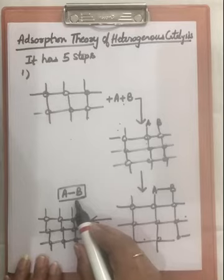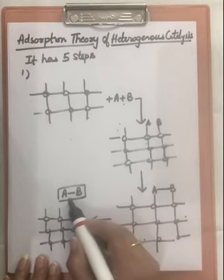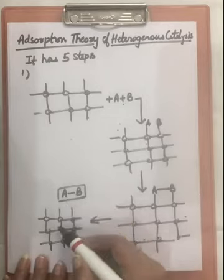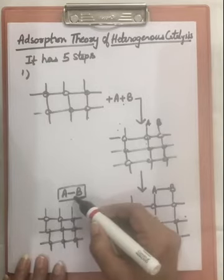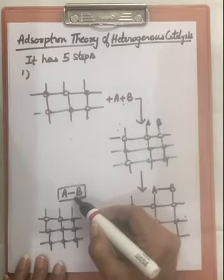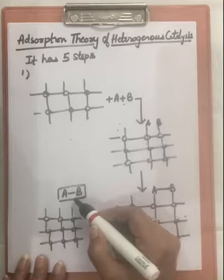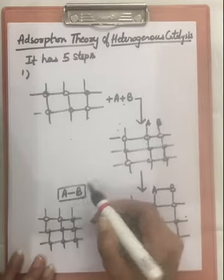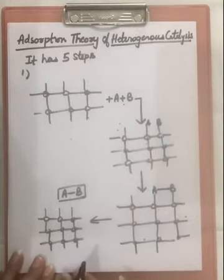The last step is that the product will start going away from the catalyst. That is called diffusion of products away from the surface of catalyst. Now I am repeating this whole mechanism.